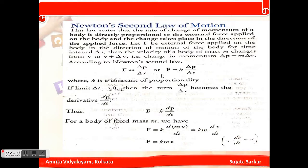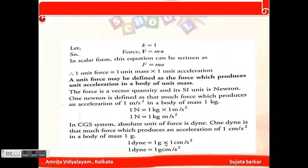Here delta p is the change in momentum and delta t is the change in time. So F equals k times delta p by delta t, where k is the proportionality constant. Writing in calculus form: F equals k times dp/dt. Since p equals mv, F equals k times m times dv/dt. Since dv/dt is acceleration a, we get F equals k·m·a.